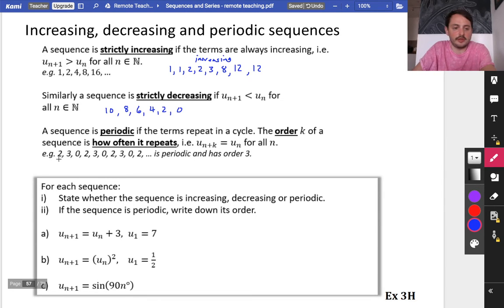So for example, here is u_1 and here is u_4. So we've said that u_1 is equal to u_4. So this one is periodic and has a period of 3 because it repeats itself every... There are three numbers in that sequence before it starts repeating itself.